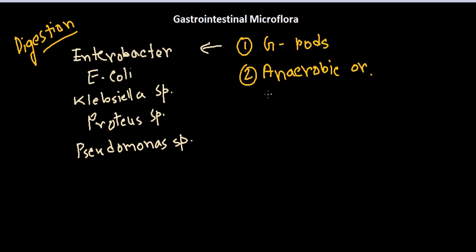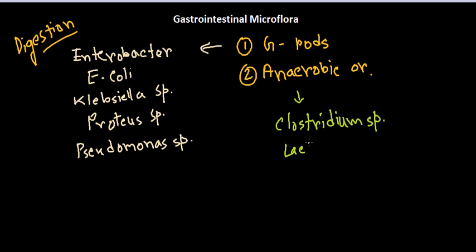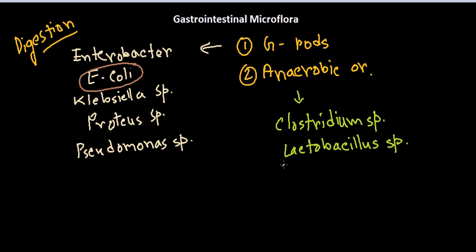In the intestinal part there is very little oxygen, so anaerobic organisms thrive there. Among the anaerobic organisms we have Clostridium species as well as Lactobacillus species. Among all the bacteria discussed, two are especially important: Escherichia coli and Lactobacillus species — both clinically, medically, and industrially. We will go into more detail about these microorganisms in later chapters.